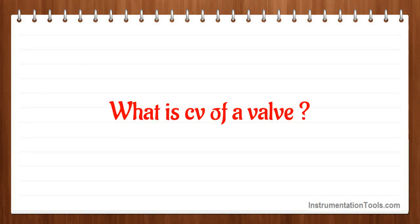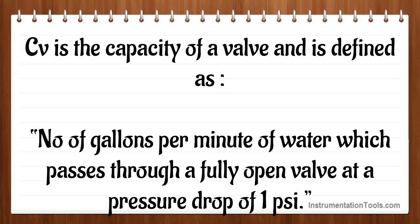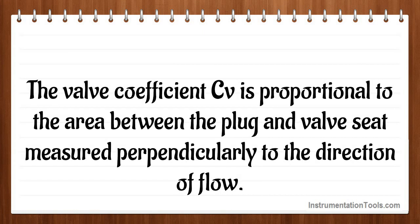What is CV of a valve? CV is the capacity of a valve and is defined as the number of gallons per minute of water which passes through a fully open valve at a pressure drop of one psi. The valve coefficient CV is proportional to the area between the plug and valve seat measured perpendicularly to the direction of flow.